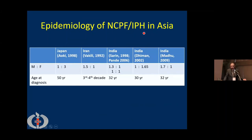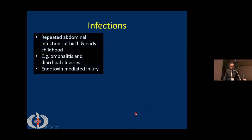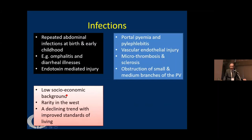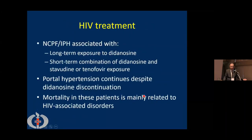The epidemiology of NCPF or IPH differs across Asia. In Japan, diagnosis is mainly in middle-aged patients; in Iran, the third to fourth decade; in India, around 30 years of age. Possible etiological factors include infections, medications, thrombophilia, and HIV. It is much more common in low socioeconomic settings and is now declining even in India. Animal studies by Dr. Sarín's group showed that repeated E. coli injections produced a similar disease, and certain medications as well as HIV disease also cause this condition.